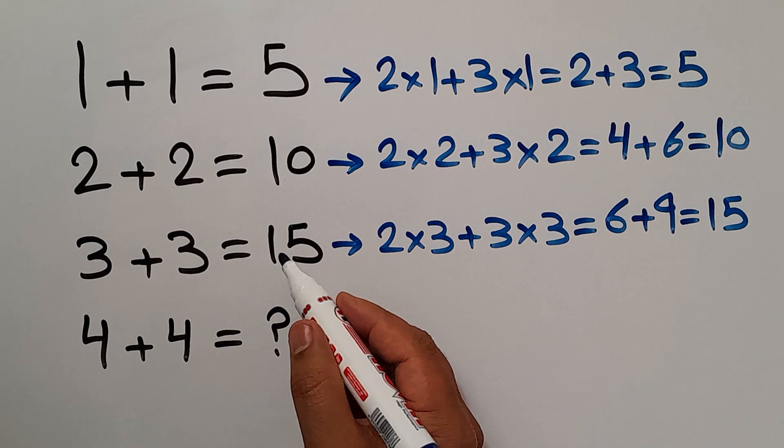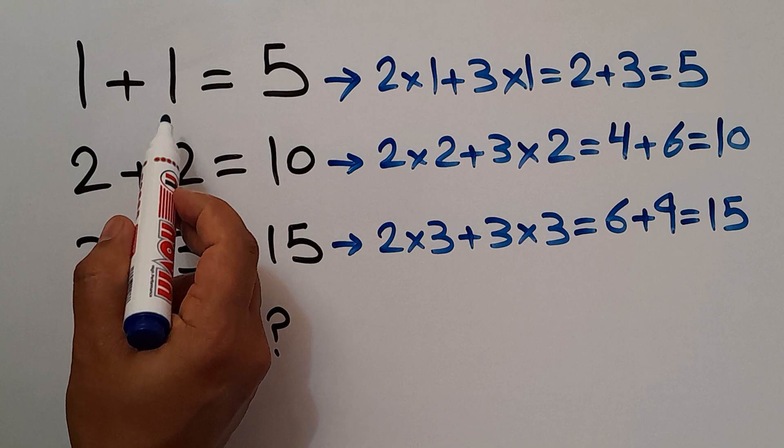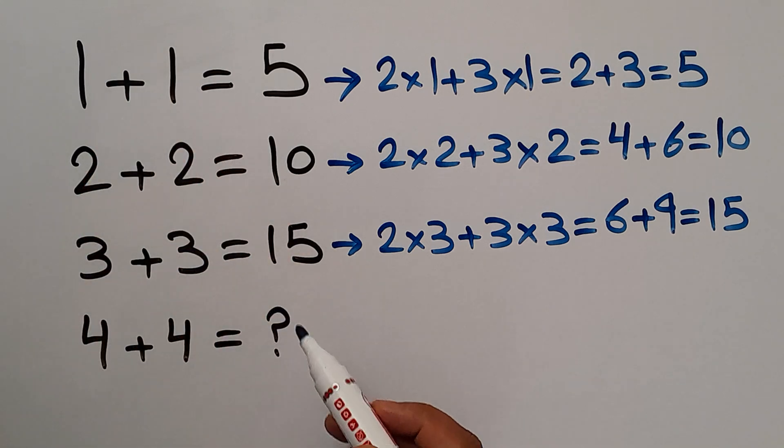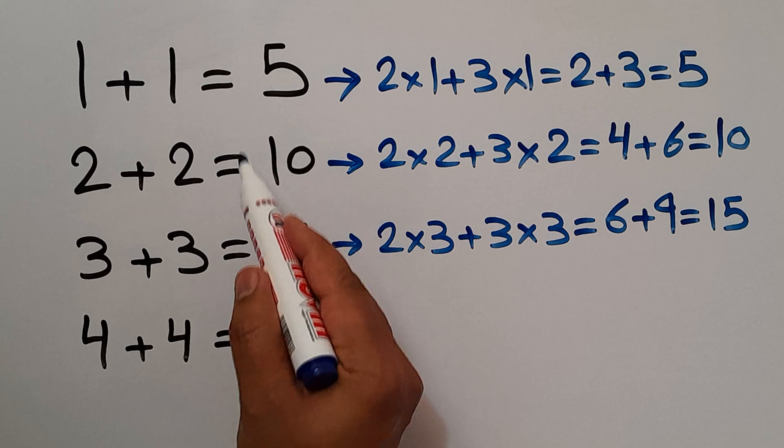So, therefore, the pattern that exists here is 2 times the first number plus 3 times the second number gives us the third number, or the right-hand side number.